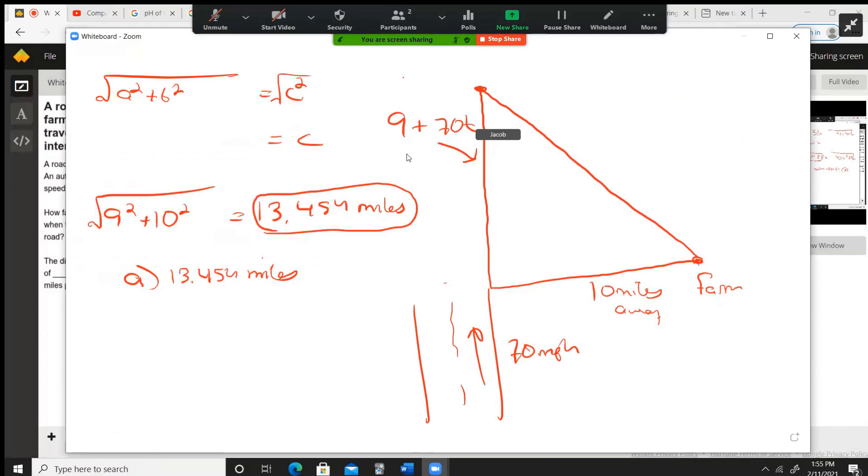Okay, so we're going to put this into the Pythagorean theorem, and we're going to get (9 + 70t) squared plus 10 squared, and that's going to be our final answer.